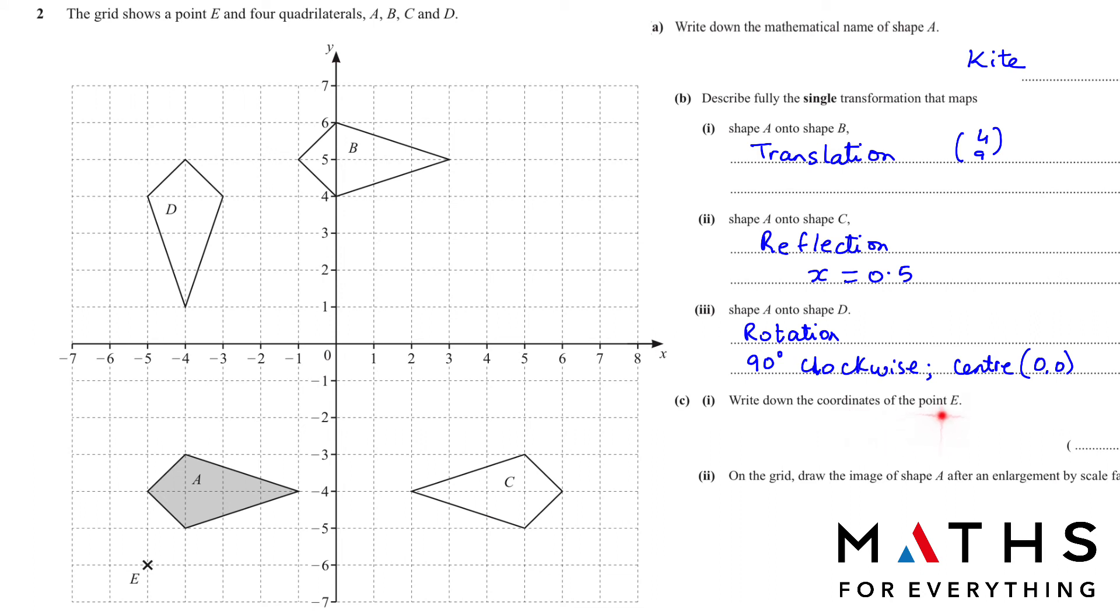Next, write down the coordinates of the point E. We always take the X first, so negative 5. And then we go to the Y axis, which is negative 6. So this is the coordinate of the point E.